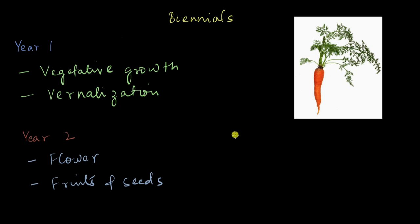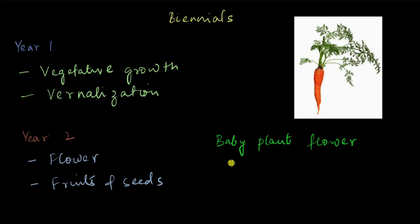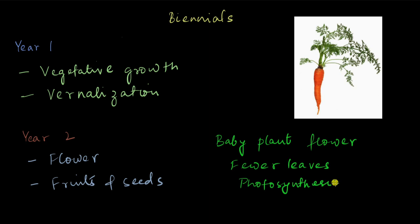What will happen if the young plant flowers in year one — if vernalization was not there and the plant was able to flower in year one itself? Keep in mind the plant is very young, so not big enough — very few leaves. And fewer leaves means very little photosynthesis happens, which is not sufficient to provide enough nutrition for the flowers that may develop. Hence the plant cannot flower, and even if it does, the flowers won't survive.